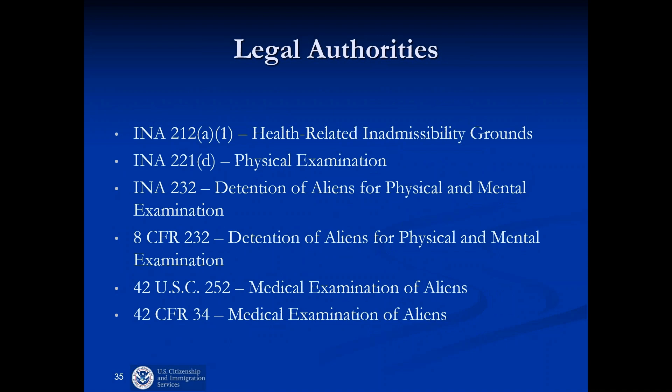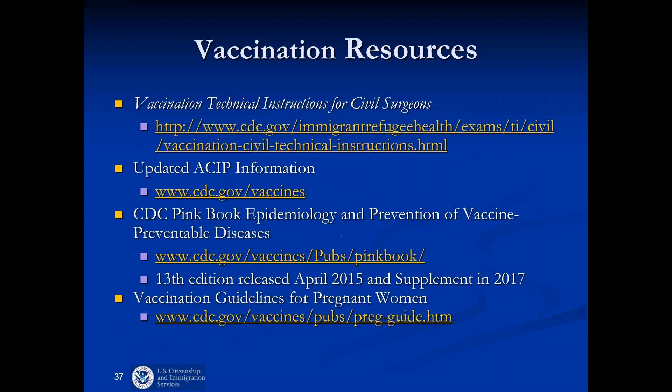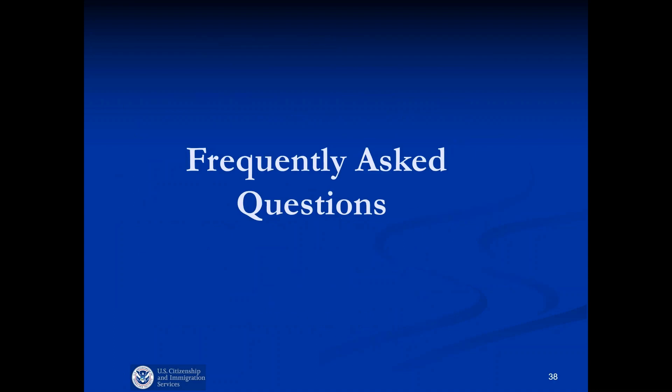This slide provides a quick reference for legal authorities governing the permanent residence process, followed by helpful general resources civil surgeons may wish to keep handy, and additional resources specific to vaccination requirements. Looking at time, I'll address just a couple of the frequently asked questions — those I don't mention are there for reference. We have seen some cases where a USCIS officer has erroneously sent a request for evidence for gonorrhea testing in the case of refugees. If you get one of those, you can simply respond that refugees only need vaccination records — they don't need any other parts of the medical exam.